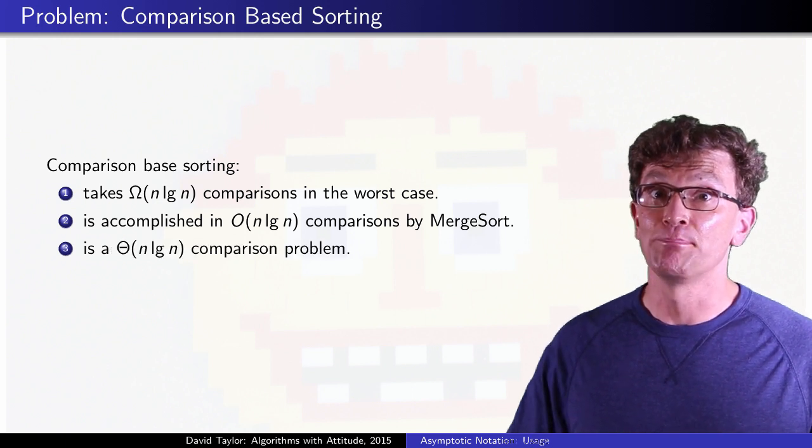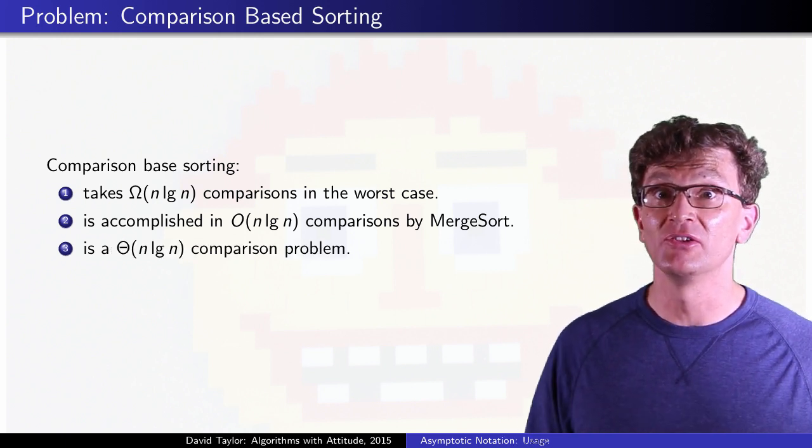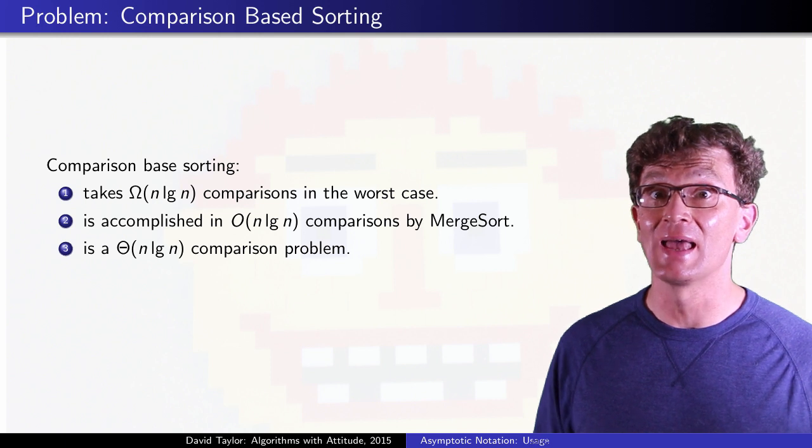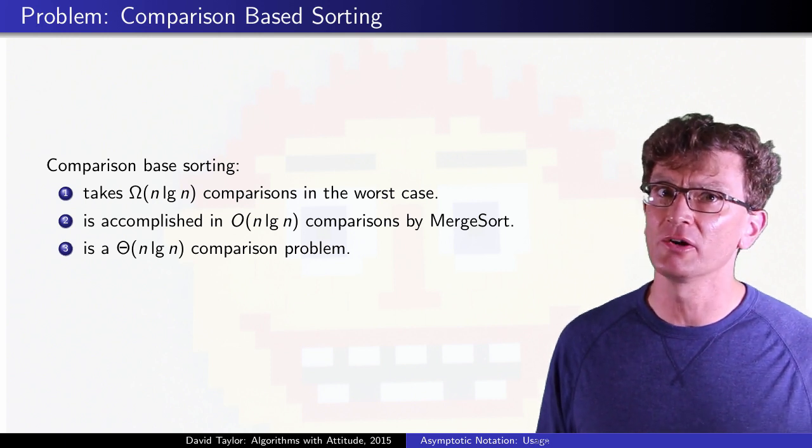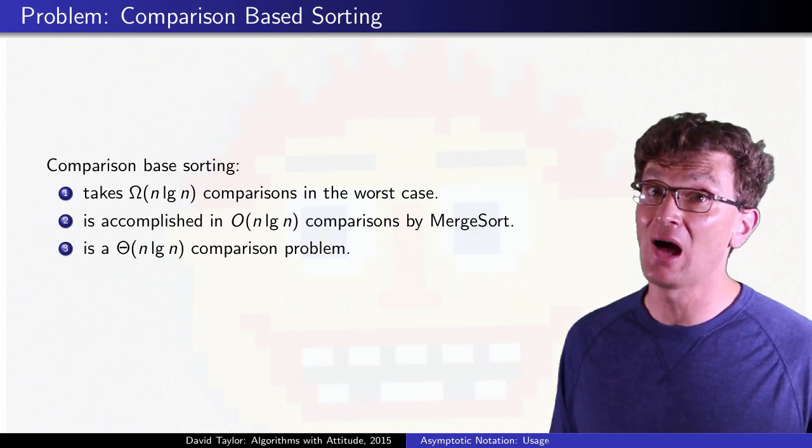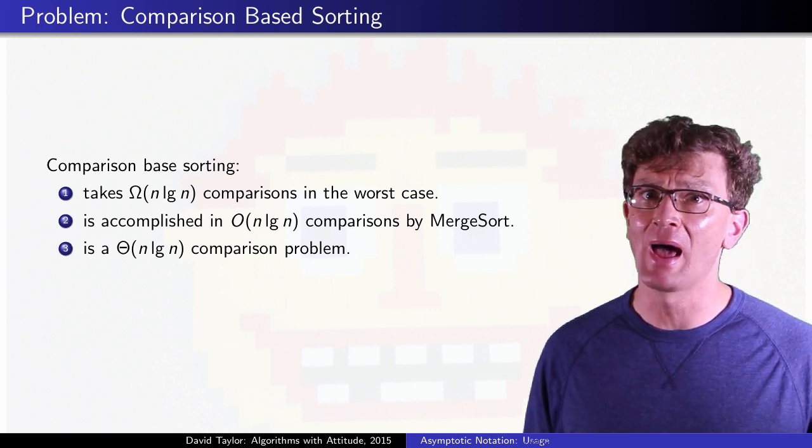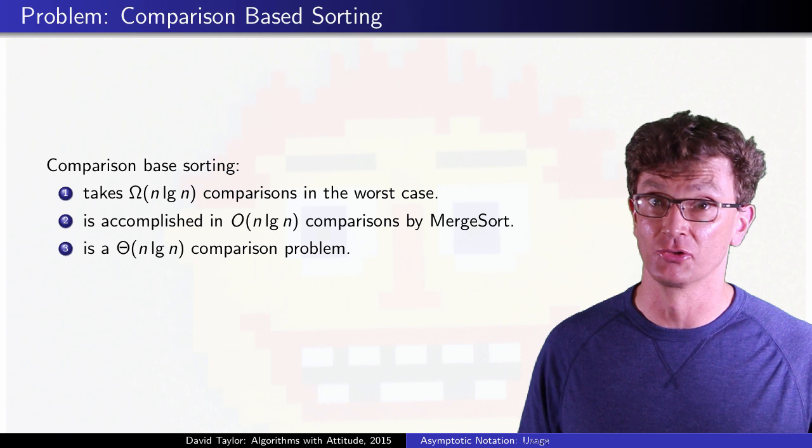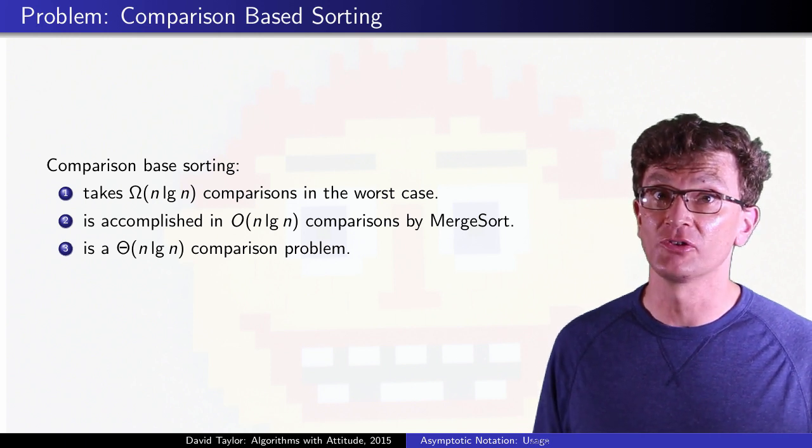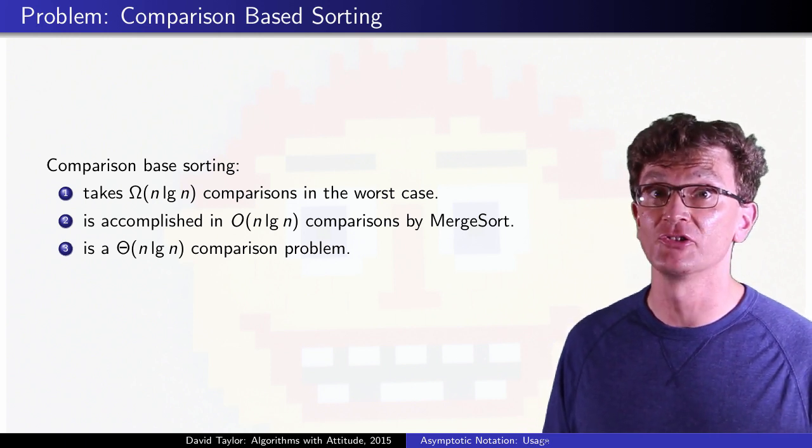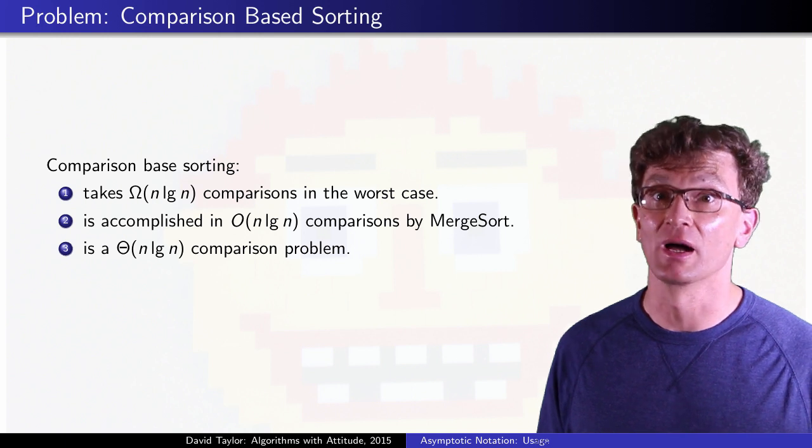That means that comparison-based sorting is a theta n log n problem. It requires that many comparisons from any algorithm, and the bound can be achieved. It doesn't matter that worse algorithms like bubble sort are out there, we can now say the problem of comparison-based sorting is an n log n problem.